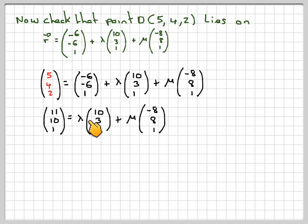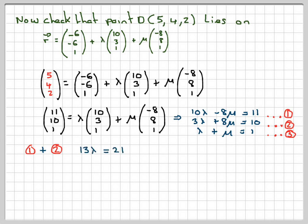So we're going to have the equation 10 lambda plus minus 8 mu is equal to 11. And we're going to have 3 lambda plus 8 mu is equal to 10. And then we're going to have lambda plus mu is equal to 1. So we're going to label each of these up. Now, it's very easy. If we just add 1 and 2, these will just eliminate in this case. So 1 plus 2, so it's your ability to solve simultaneous equations. So we're going to have 13 lambda, 10 plus 3, is equal to 11 plus 10, which is 21, which gives lambda is equal to 21 over 13.